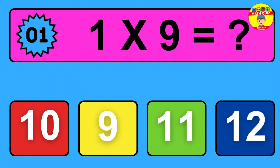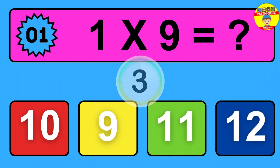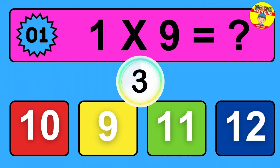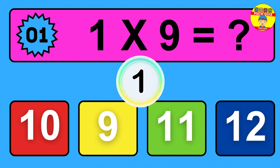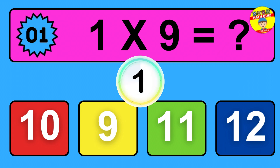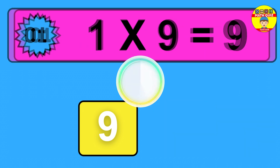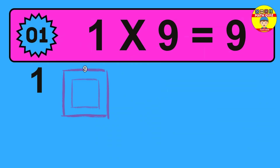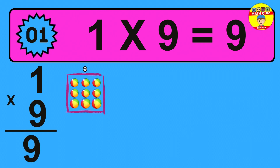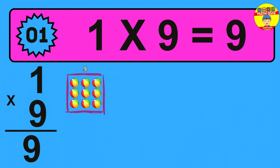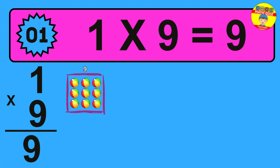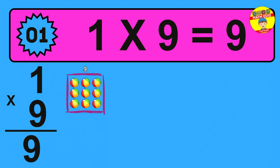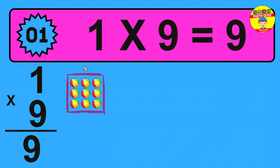Question 1: 1 times 9 equals what? The answer is 1 times 9 is 9. To calculate, we have 1 group with 9 balls each one. So how many balls do we have? 9 balls.